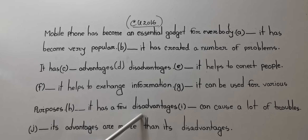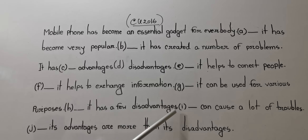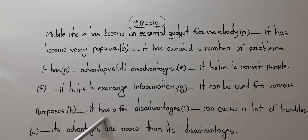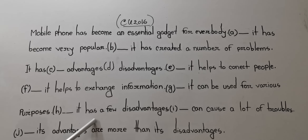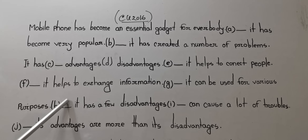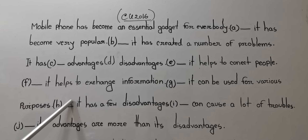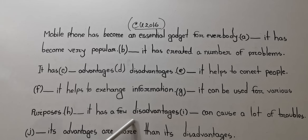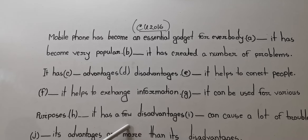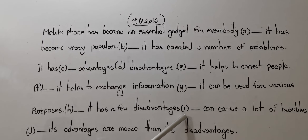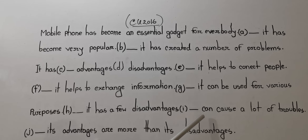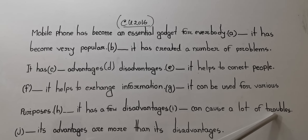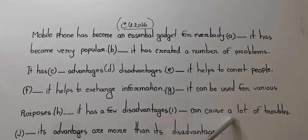It has a few disadvantages. If it was positive, it was also negative — it can be used for both purposes. It has a few disadvantages, and can cause a lot of troubles. What can cause a lot of troubles?